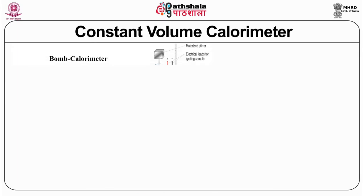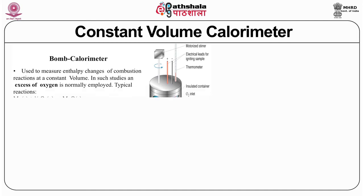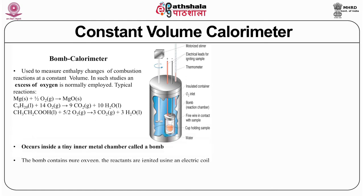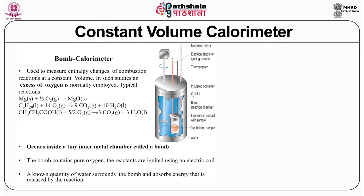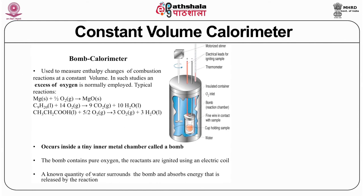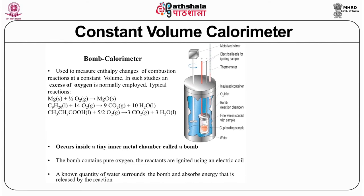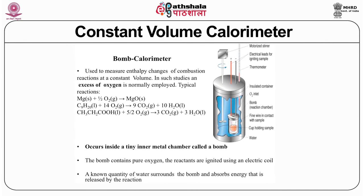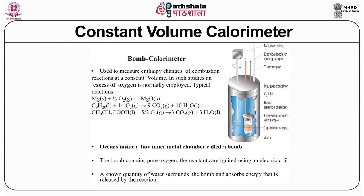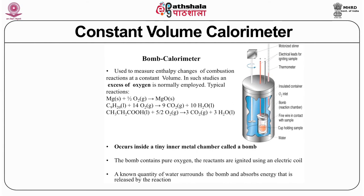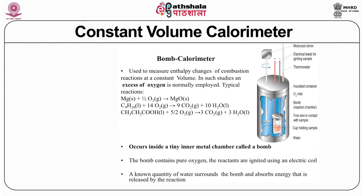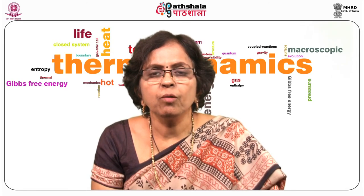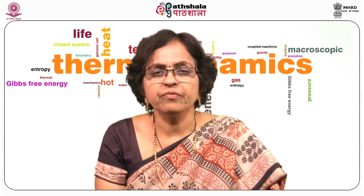The bomb calorimeter, also called the constant volume calorimeter, is used to measure the enthalpy changes of combustion reactions, in which excess oxygen is normally employed. For example, methanol plus oxygen gives CO2 plus H2O. This occurs in a tiny inner metal chamber called the bomb, surrounded by water with a stirrer and a crucible where the sample is kept. An outer insulated container minimizes heat loss to the surroundings, so only the heat changes between the reactant and the surrounding water are measured.